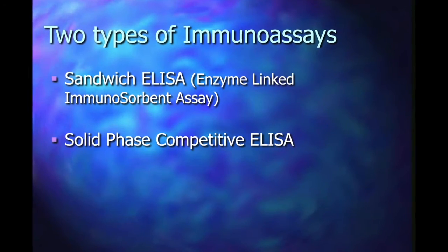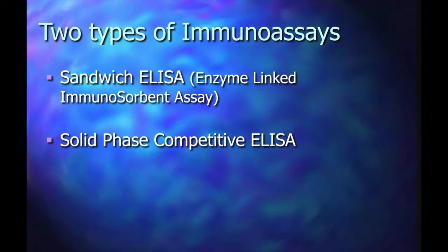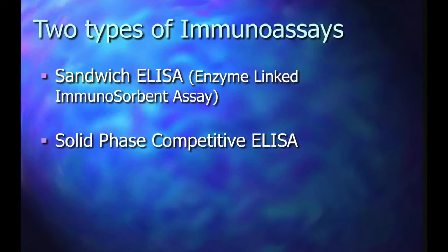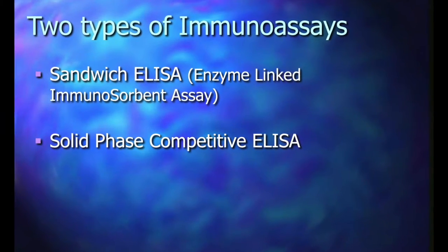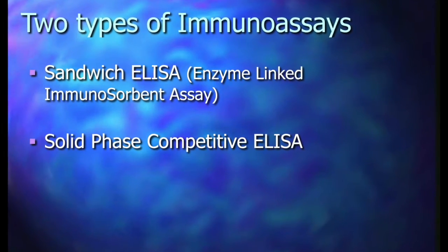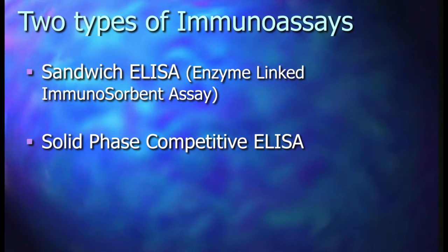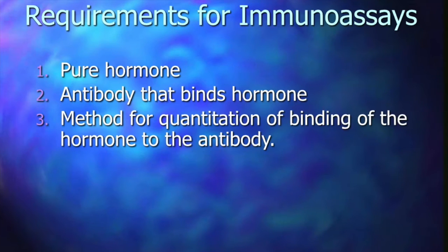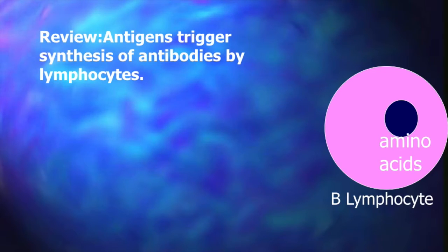There are two types of immunoassays that you need to know for this week's lab: the sandwich ELISA and the solid-phase competitive ELISA. The three requirements for these assays are pure hormone, antibody to bind the hormone, and a method for quantifying the data.